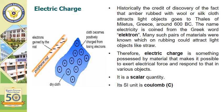Historically, electric charge was discovered by Thales — a name you may have heard in mathematics — around 600 BC, when he noticed that amber, a yellow-colored material used to make ornaments in earlier times, rubbed with wool or silk cloth, attracts light objects such as thin papers, leaves, and small pieces of dust particles. The name electricity was given from the Greek word 'elektron' (E-L-E-K-T-R-O-N). Many such pairs of insulating materials were known which, on rubbing, could attract light objects like straw.